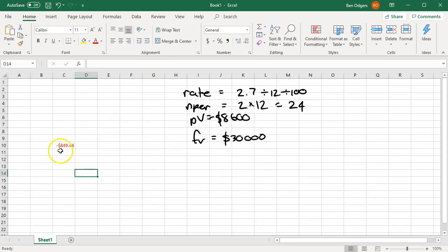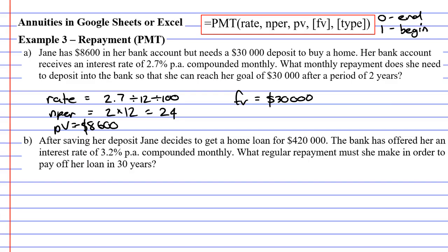And we get the amount of negative $849.46. So going back, we're going to write down that our repayment PMT is going to be negative $849.46.